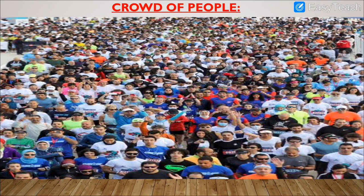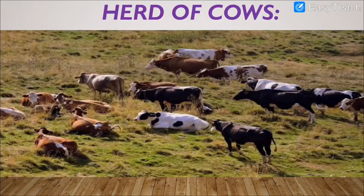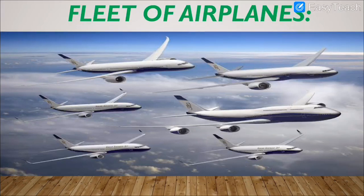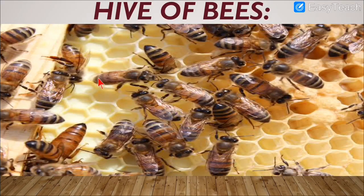As you can see on your screen: crowd of people — so many people all together. Herd of cows — so many cows sitting together in a farm. Pride of lions — so many lions sitting together at a place. Fleet of airplanes — so many airplanes flying together in the sky, and this group is called a fleet. Hive of bees — all the honey bees gathering at a place, also called beehive.